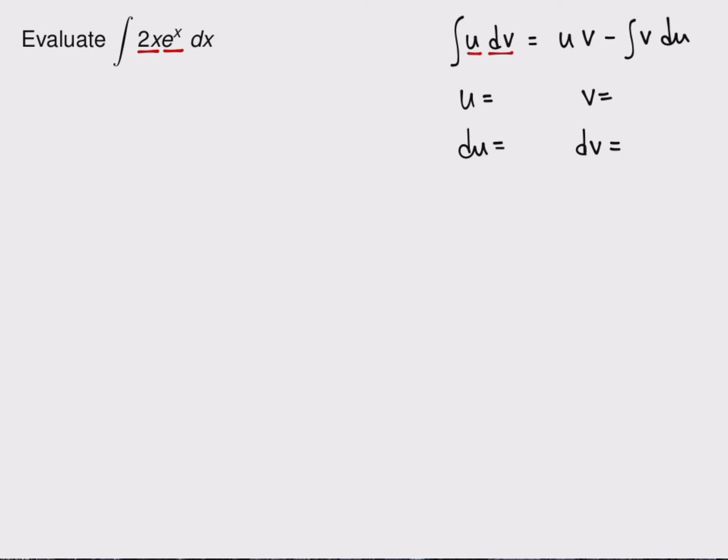So in that case, in terms of integrating, I'm going to pick e to the x to be my dv. And the reason I'm picking that is that when I integrate it, I'm only going to get e to the x again. If I had chosen 2x, my integral would be x squared and that is bigger and probably less easy to work with.